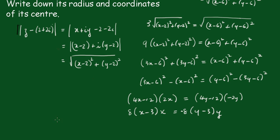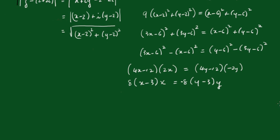Now the 8's go out and we get x squared minus 3x equals minus y squared plus 3y. Now take this across the other side, I'll get x squared minus 3x plus y squared minus 3y equals naught.